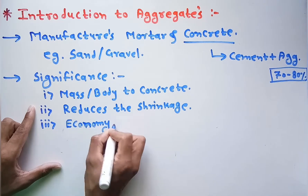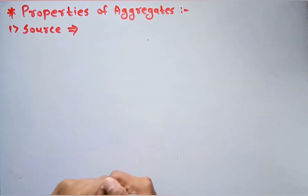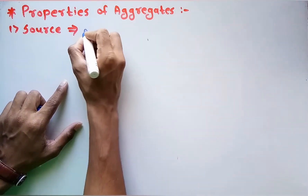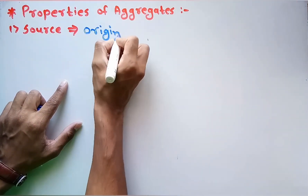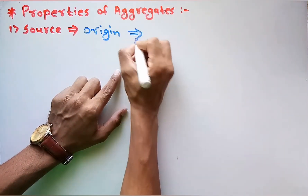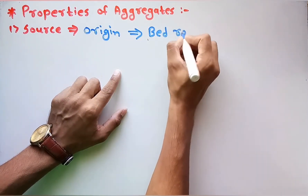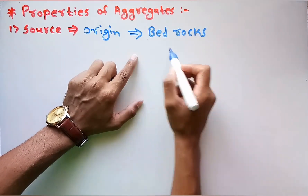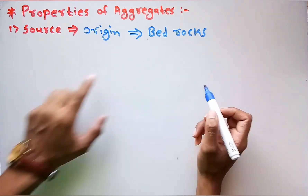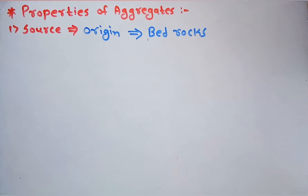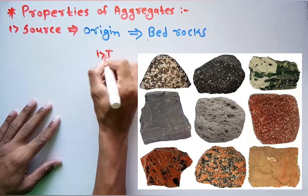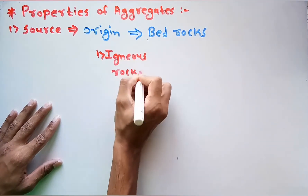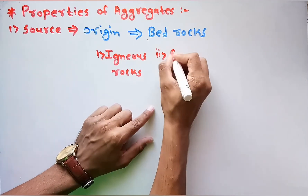Now we will discuss the various properties of aggregates. The first property is source, which is simply the origin. The origin of most aggregates is from bedrocks. These bedrocks are classified as igneous rocks, sedimentary rocks, and metamorphic rocks.